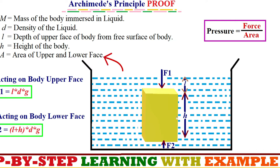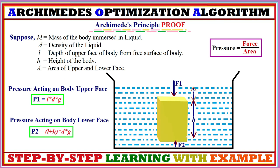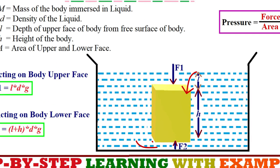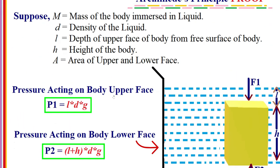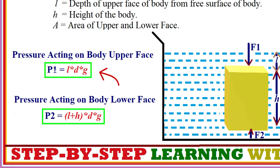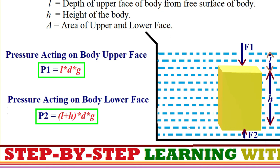The area of the upper and lower face is denoted as a. We will calculate the pressure acting on the body's upper and lower faces. The pressure acting on the body's upper face, p1, equals l times d times g — that is, the depth of the upper face from the surface multiplied by liquid density and acceleration due to gravity. Next, the pressure acting on the body's lower face involves the length plus body height.